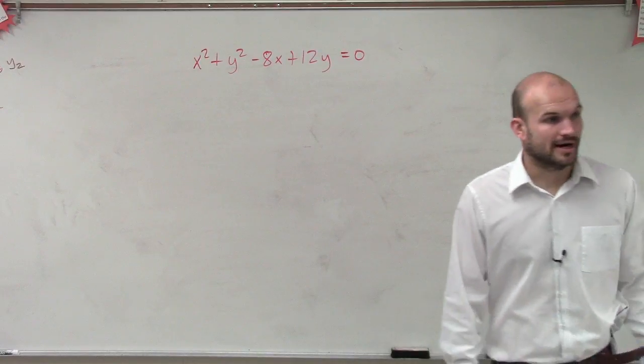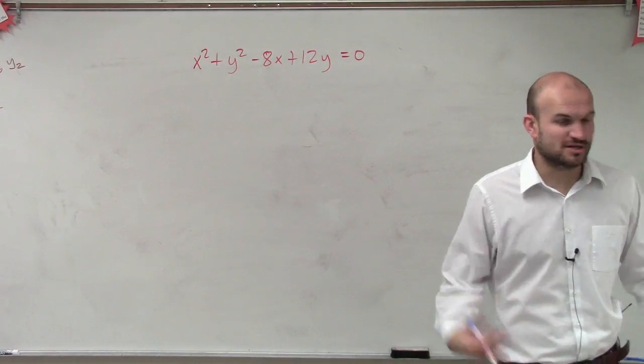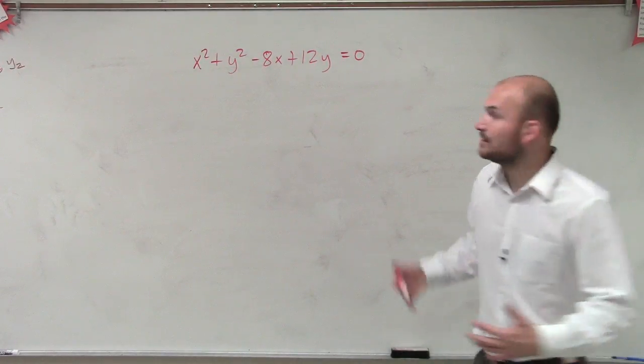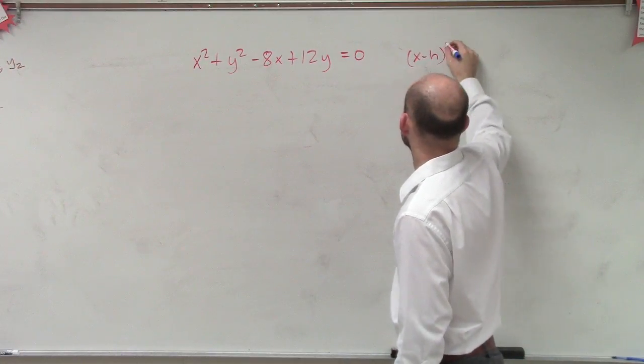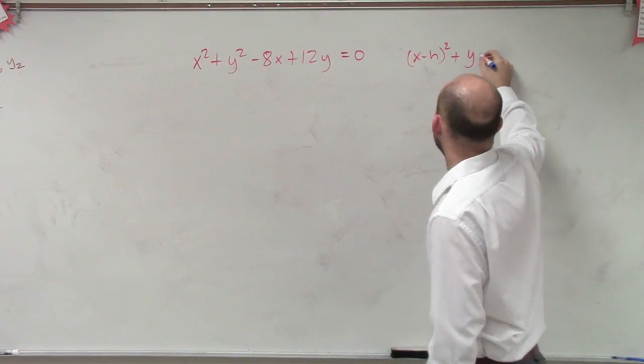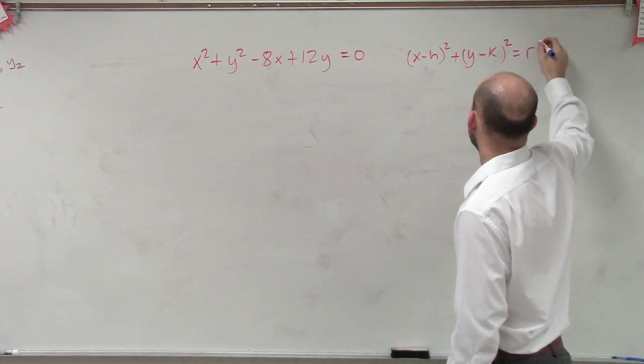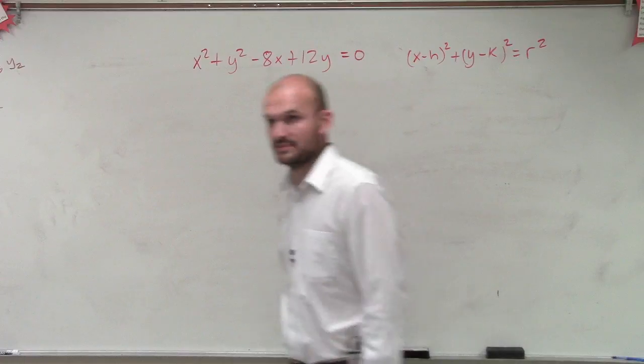So to graph a problem like this, we know that a circle is there. We talked about the standard form of a circle. The standard form of a circle says x minus h squared plus y minus k squared equals r squared.